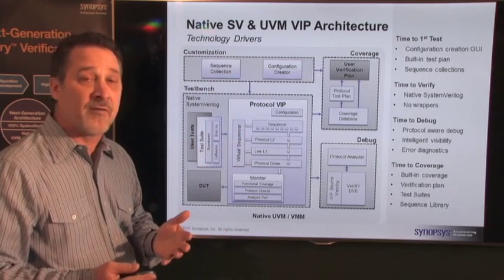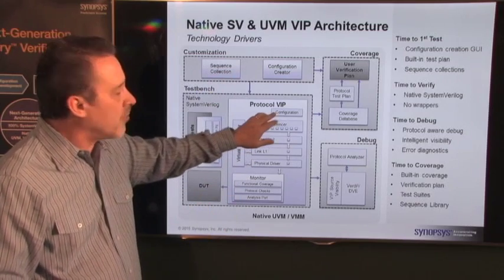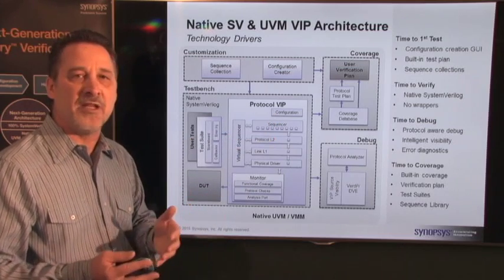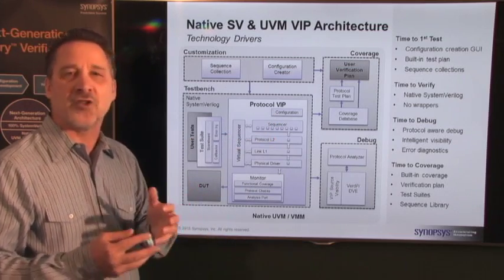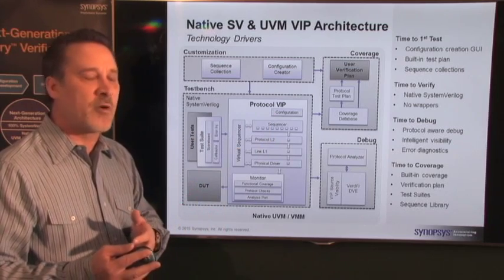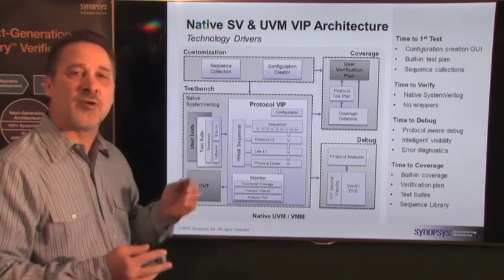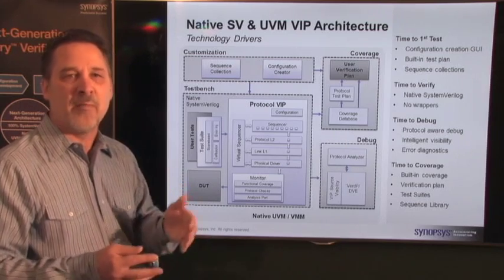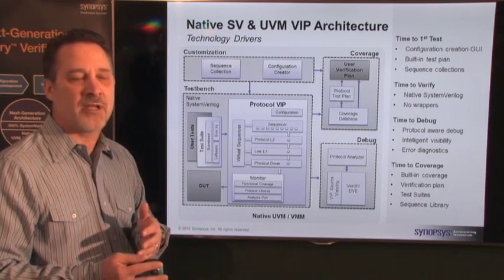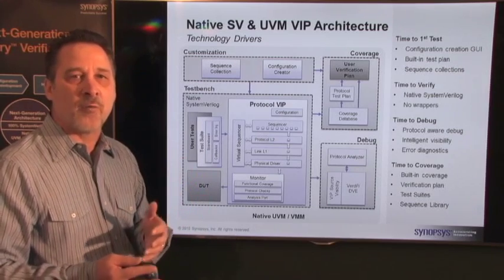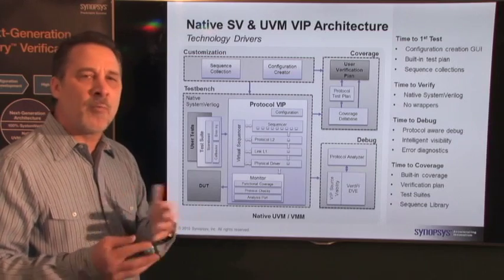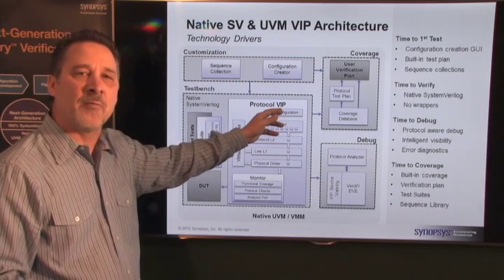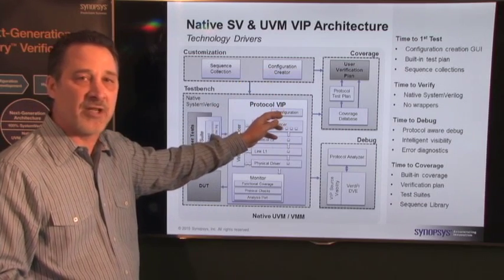We also looked at what it would take to configure the VIP. While we support a normal UVM configuration object inside the VIP that you can configure with the config DB in UVM — where you can randomize and all that — we decided to also support another method: a configuration creator GUI that allows you to configure the VIP more easily. It walks you through all the attributes of the configuration object, validates it, and writes out a config file. So we support both ways of configuration — a file-based approach through the configuration GUI, and a more traditional UVM constrained random verification methodology through a configuration object.